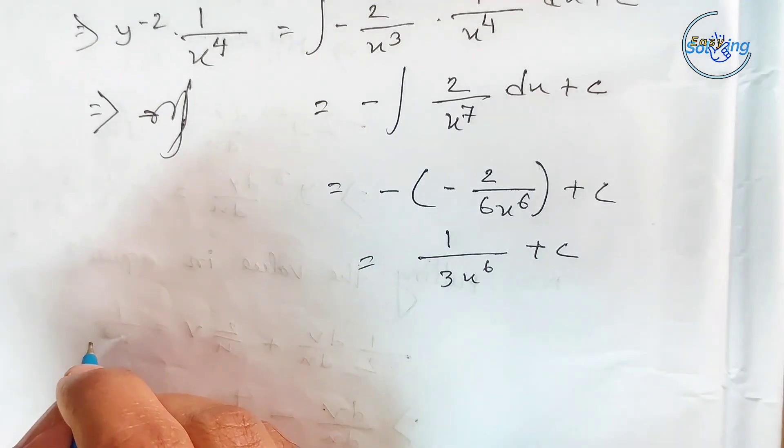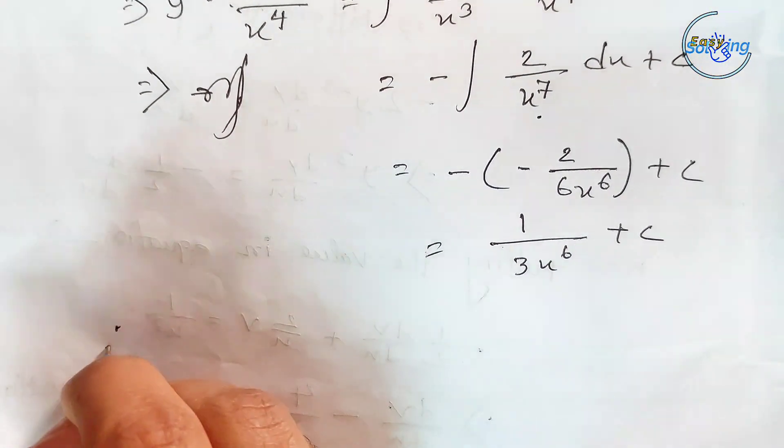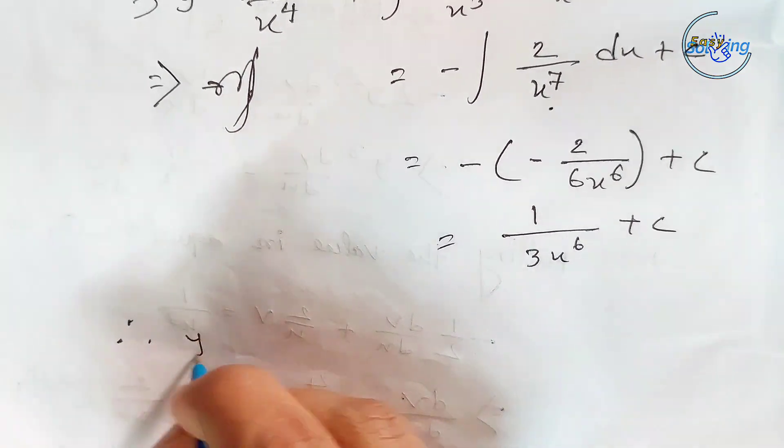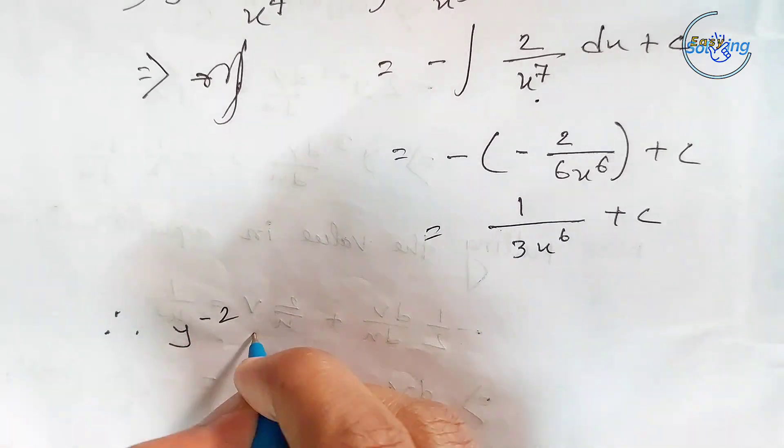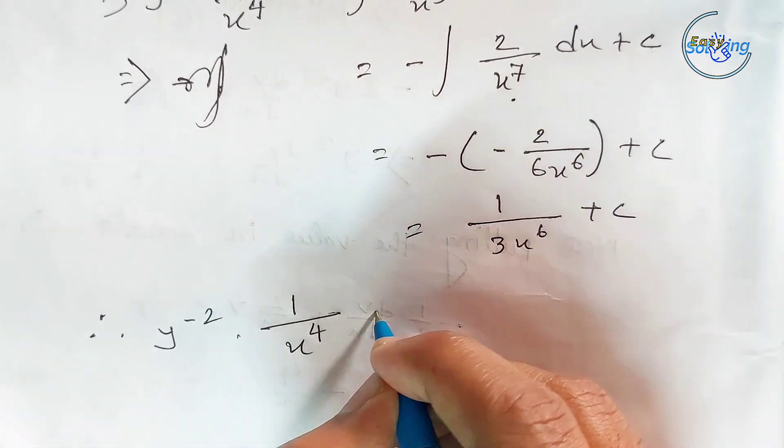So y^(-2)/x⁴ = 1/(3x⁶) + C, which gives y^(-2) = x⁴/(3x⁶) + C·x⁴ = 1/(3x²) + C·x⁴.